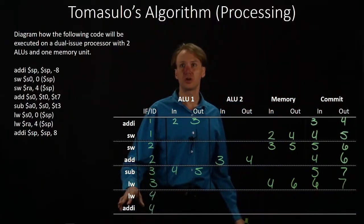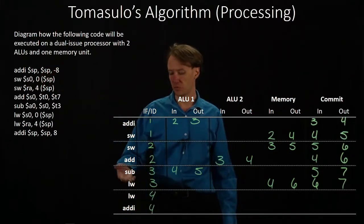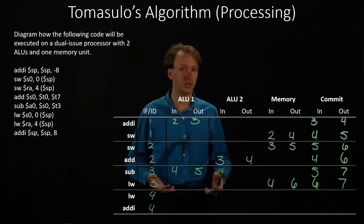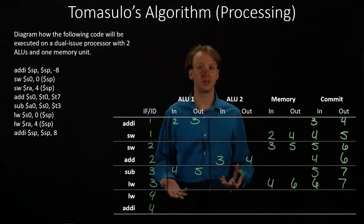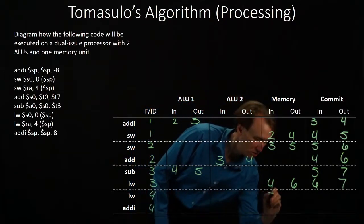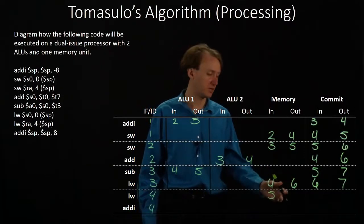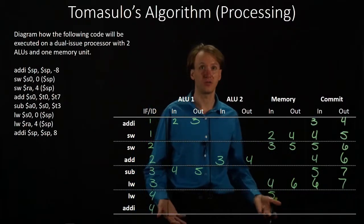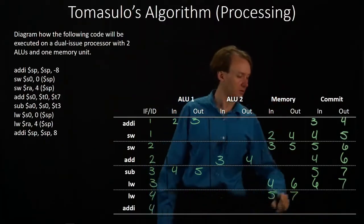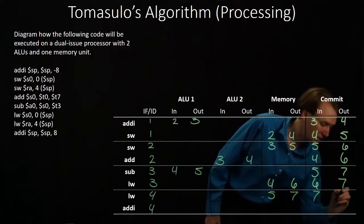Next we have our second load word instruction, which is only dependent on the stack pointer — as was the previous load word instruction. The stack pointer was updated in cycle three, so that data is available to us immediately. We just have to send this instruction off to the memory unit, where it will arrive in cycle five. It will wait until cycle seven, since that's the first time the memory unit will be free. It reaches the commit unit at the end of cycle seven and can be committed in cycle eight.